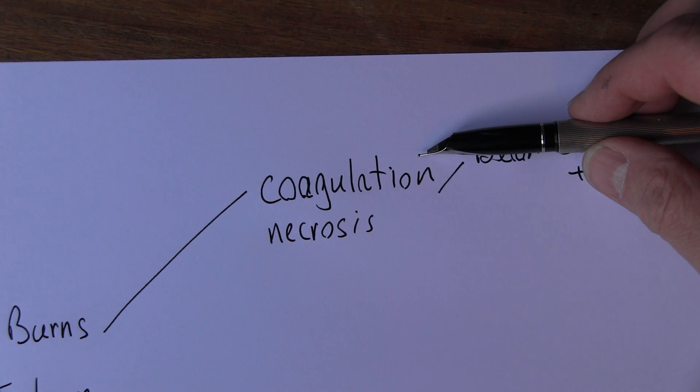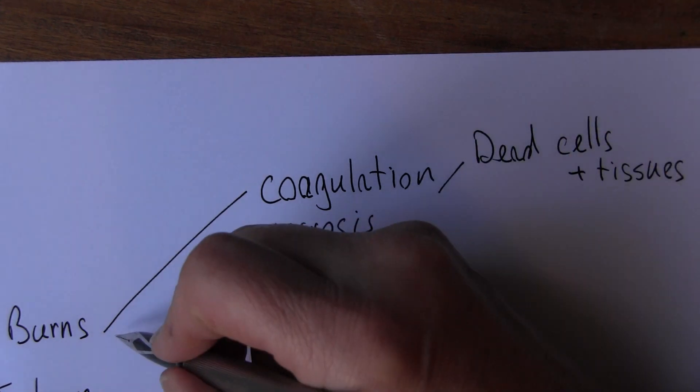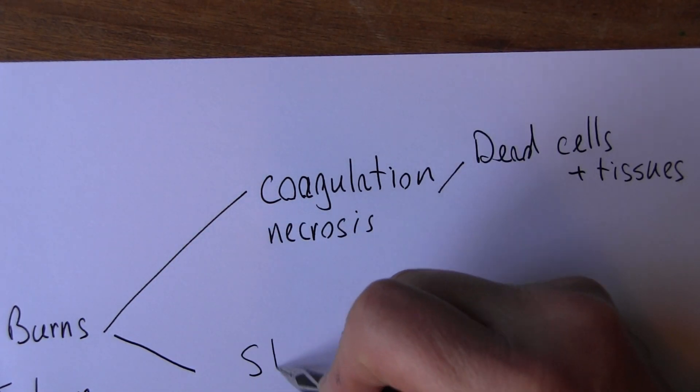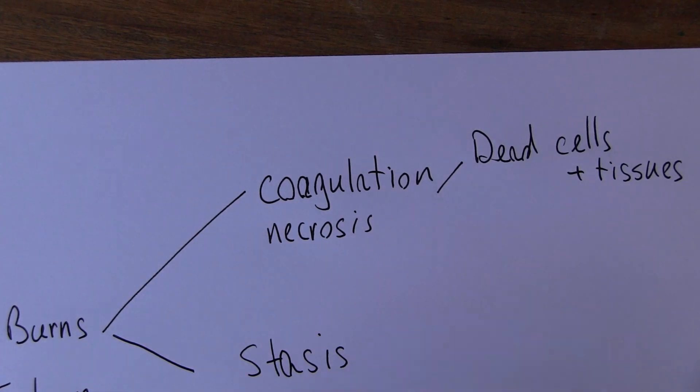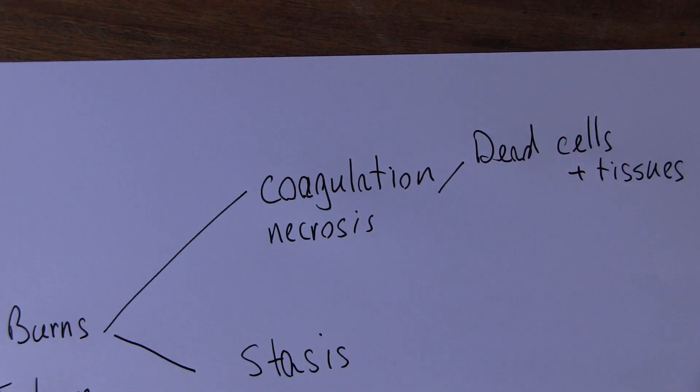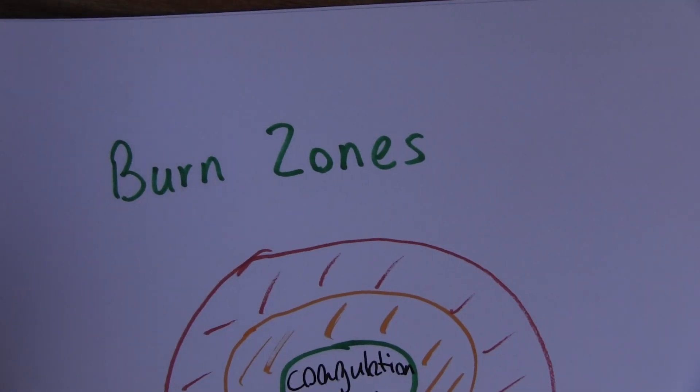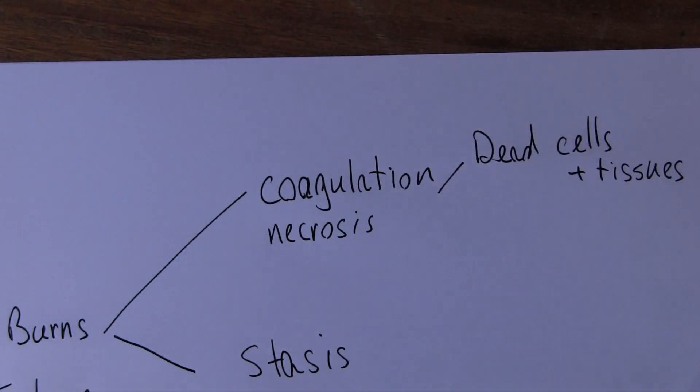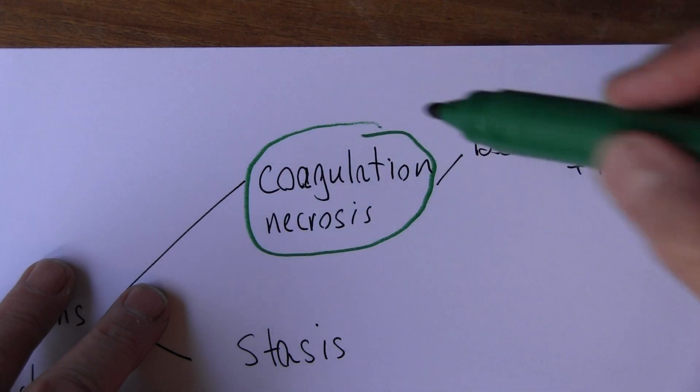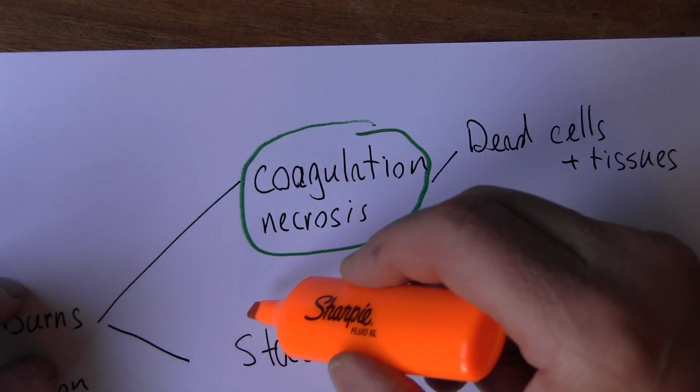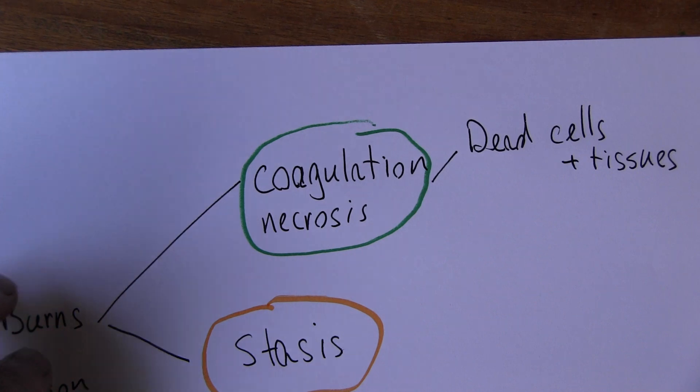Now the next zone is the zone of stasis. Just to remind ourselves of the original diagram, the coagulation zone and the zone of stasis. So the coagulation zone we did in green, the zone of stasis we did in this orange color.